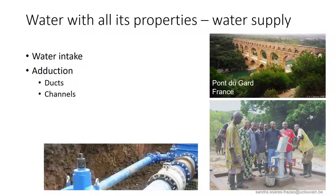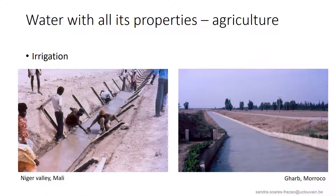We can also consider water with all its properties — meaning water used mainly for human consumption or human-related activities like agriculture. First, we have water supply that requires water intake and adduction. Then agriculture, for which irrigation canals are very important in order to grow crops in areas less served with water.